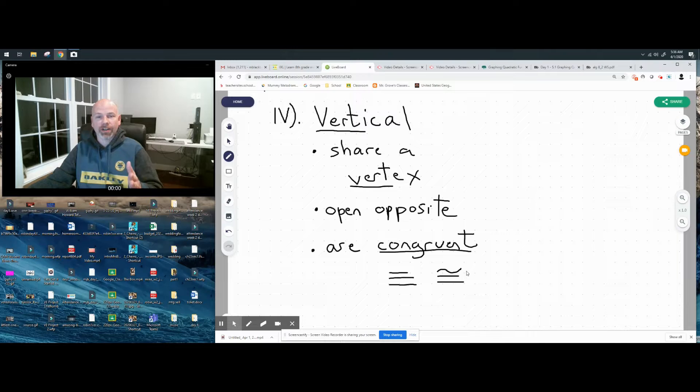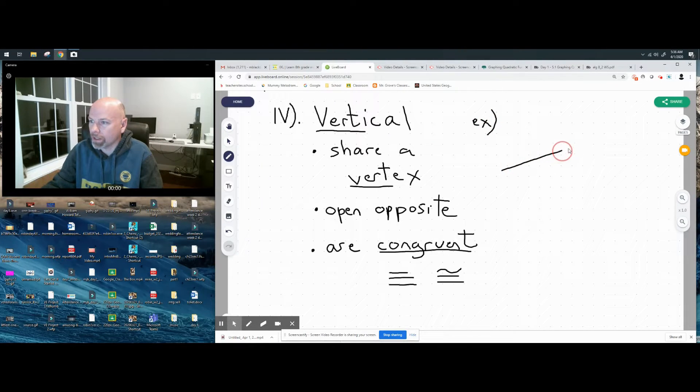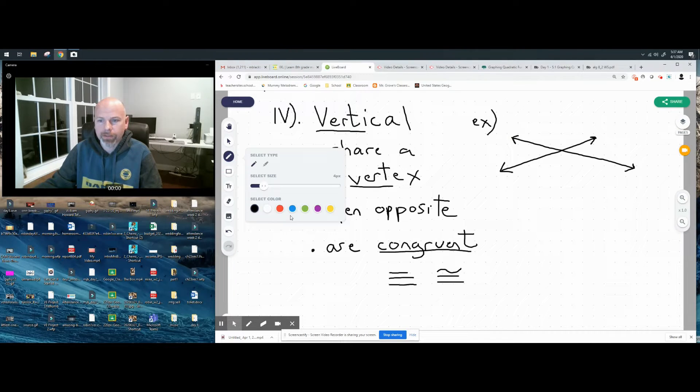Vertical angles are exactly the same. What do they look like? We'll see an example of that. Typically they look like the letter X. So there'll be one line, and there'll be another line introduced.